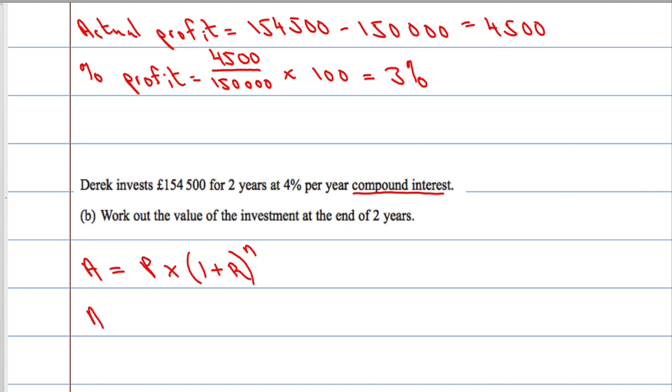So our amount will equal the principal. The principal is what you invest at the start, £154,500. So £154,500 multiplied by 1 plus r. The rate is 4%, which is 0.04. So 1.04 to the power of n, the number of years, 2 years.